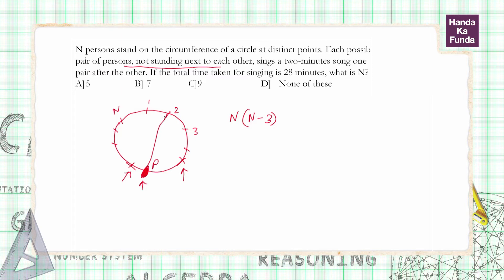Because the song that this person, let me call him P, P sings with 2, this particular song will be counted in P's songs. This particular song will be counted in 2's songs as well. So each song will get counted twice. That means the actual number of songs will be N into N minus 3 by 2.